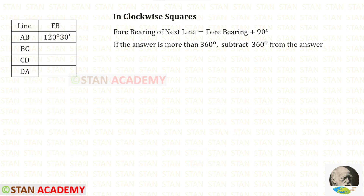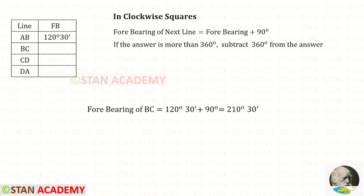In the clockwise square, the formula to find the fore bearing of the next line is: fore bearing plus 90 degrees. If the answer is more than 360 degrees, we have to subtract 360 degrees from the answer. Now using this formula, let us find the fore bearing of BC.